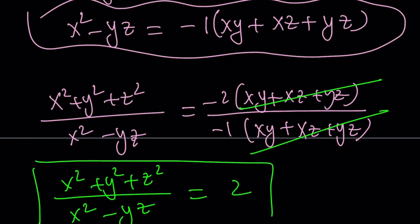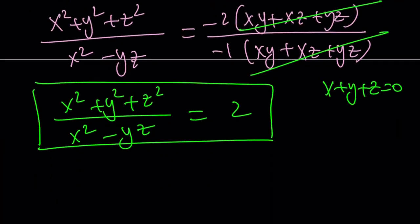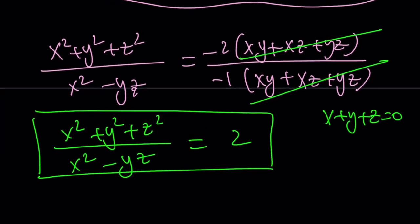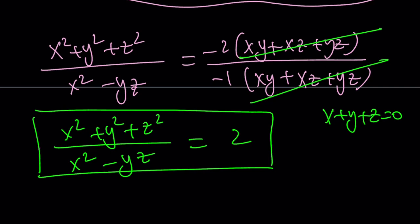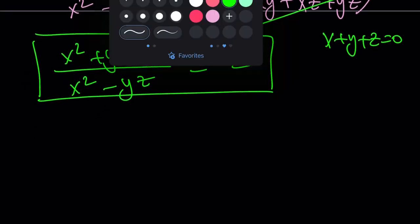For the third method, let's briefly mention it. Since we're given x plus y plus z equals 0, you could just replace x, y, z with specific numerical values satisfying that condition. One thing to be careful about is not to use 0, 0, 0 for x, y, z, because that makes the expression indeterminate — you get zero over zero. That's also why in the second method we could safely multiply by x, since we know x does not equal zero.